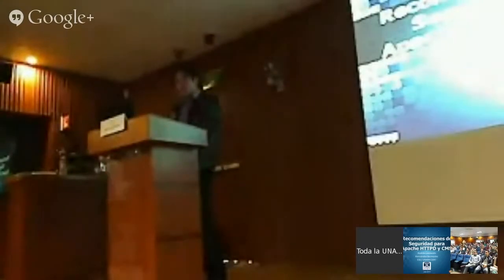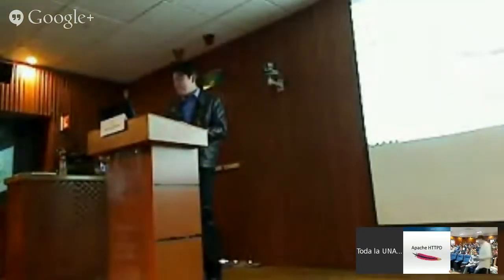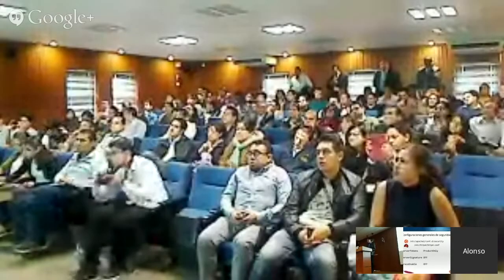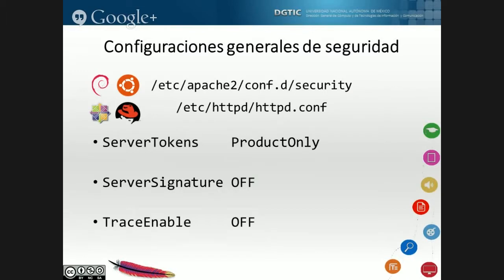Vamos a abordar recomendaciones para Apache HTTP, que es el servidor web que más ha estado implementado. Las recomendaciones son para la versión 2.2. Casi siempre Apache por defecto muestra la versión, lo cual no es muy bueno. Con estas tres directivas: con Server Tokens no muestro la versión de mi servidor web; si se muestra alguna página de error, con Server Signature tampoco muestro qué versiones ni qué módulos están habilitados; y hay ataques que se aprovechan del método HTTP Trace, así que también procedemos a deshabilitarlo.